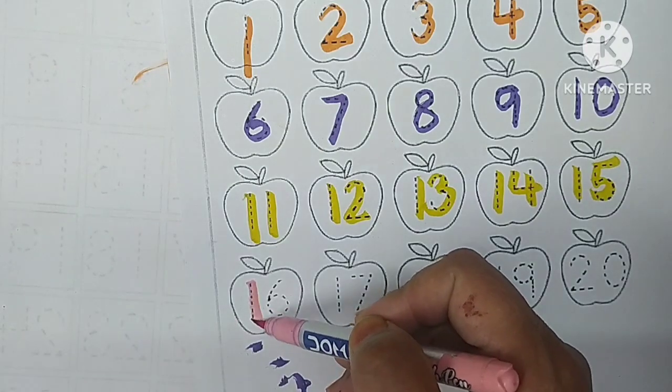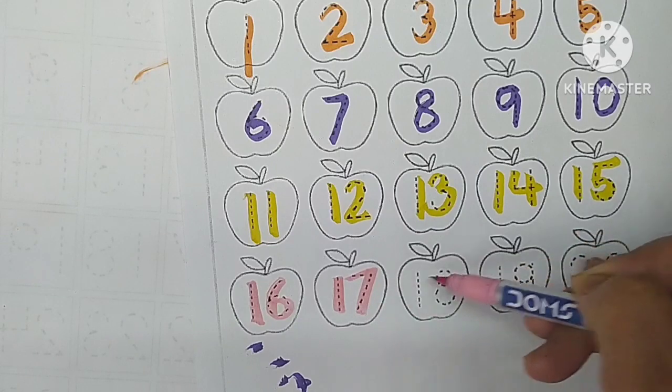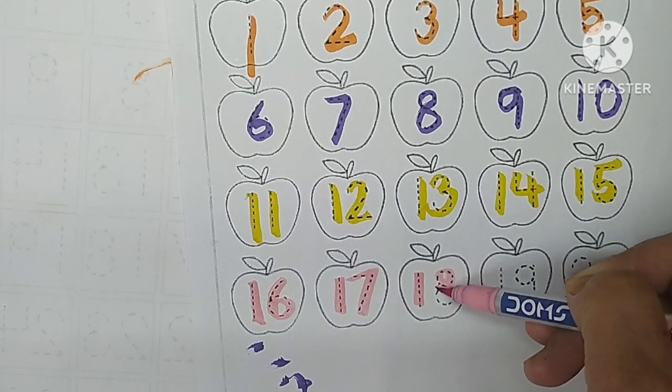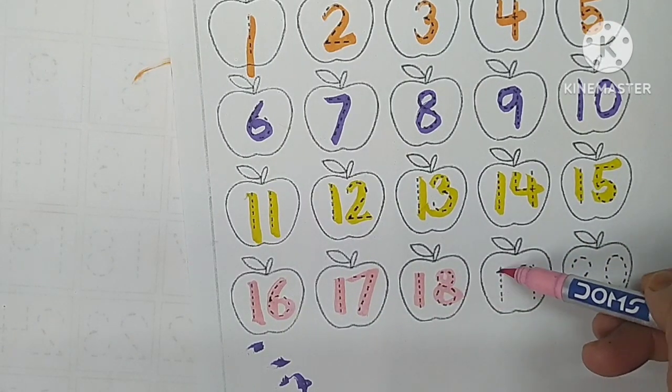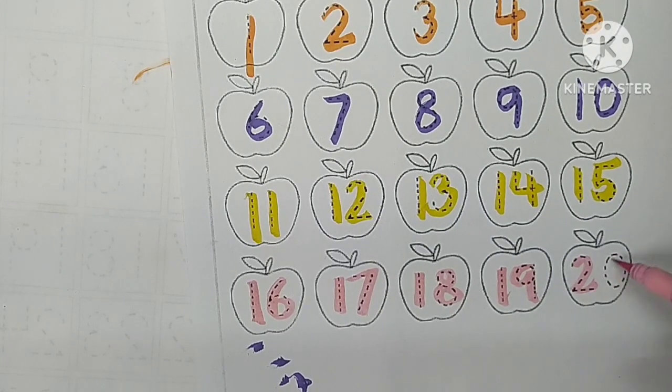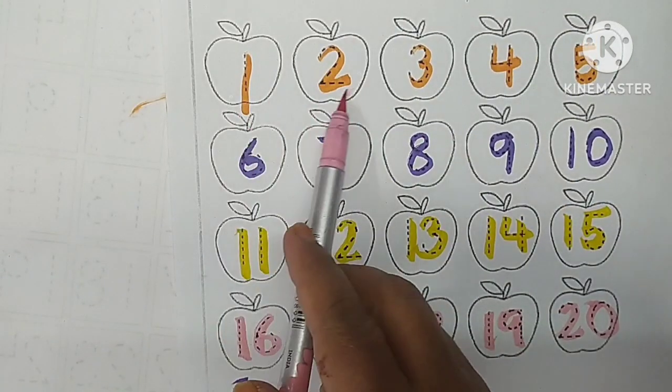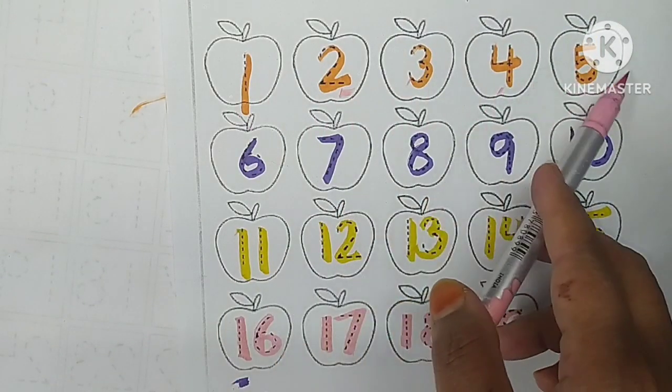One six, sixteen. One seven, seventeen. One eight, eighteen. One nine, nineteen. Two zero, twenty. One, two, three, four, five, six, seven, eight, nine, ten.